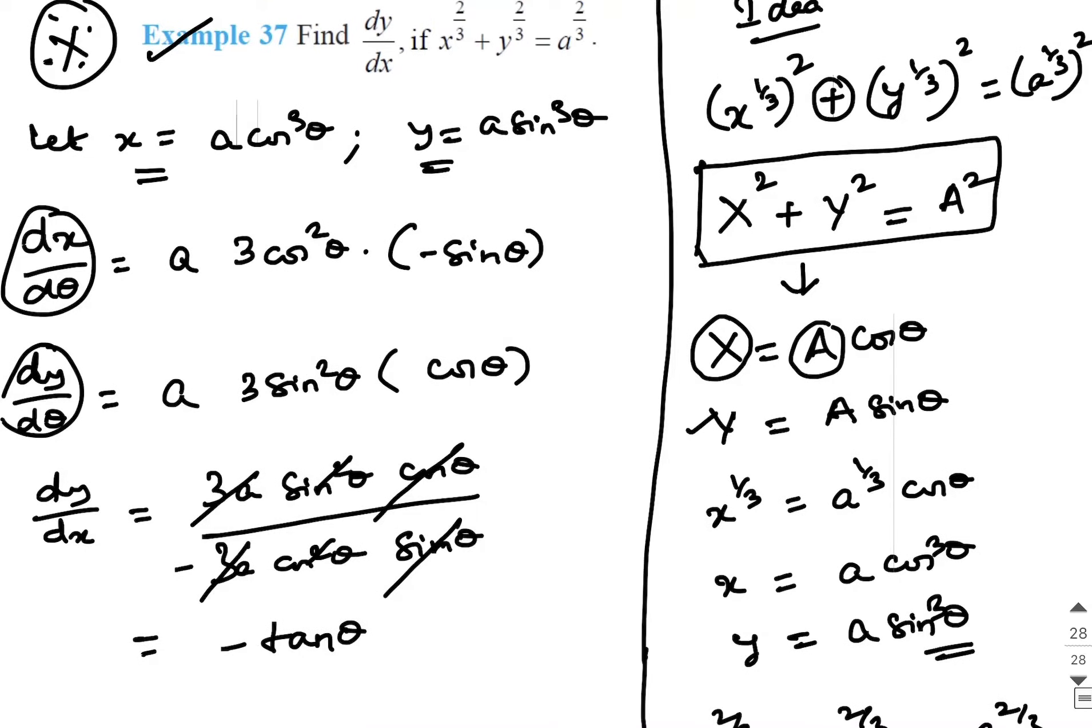But here since theta is not given, you are not supposed to leave the answer like this. You need to bring it back to the value of x and y because the parametric form is not given in the question. It is we who create it. Whichever is not given in the question should not be there.